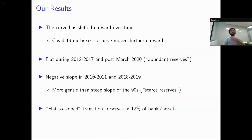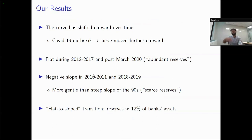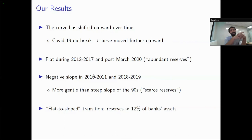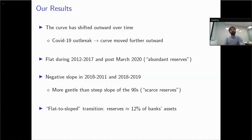The key results: the curve shifted outward each time, and further after the onset of COVID-19. The curve was flat during 2012–2017 and after March 2020 — periods of abundant or super-abundant reserves. However, even though reserves were almost always above one trillion, we still observe a negative slope at the beginning of the sample in 2010–2011 and again in 2018–2019. The transition level — normalized reserves at which the curve stops being flat and starts displaying a significantly negative slope — is around 12 percent of bank assets.